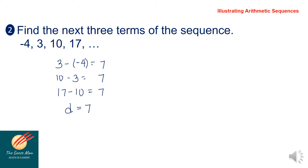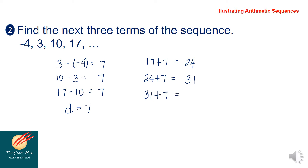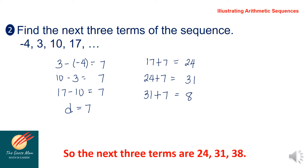To find the next 3 terms, start with 17 and add the common difference of 7 each time. So 17 plus 7 equals 24, 24 plus 7 equals 31, and 31 plus 7 equals 38. Therefore, the next 3 terms are 24, 31, and 38.